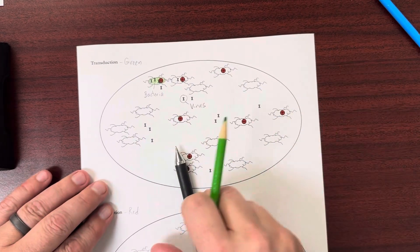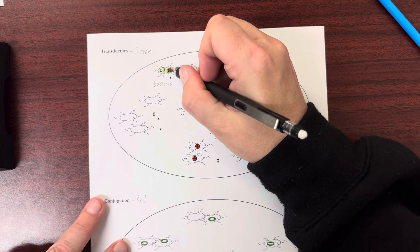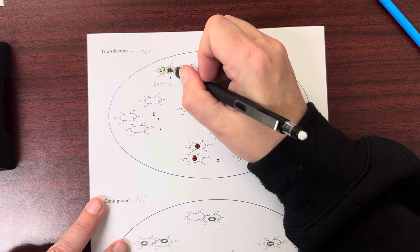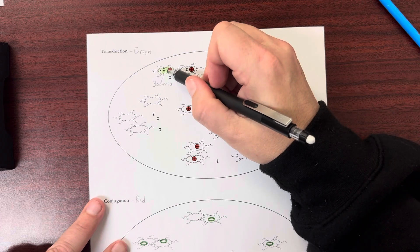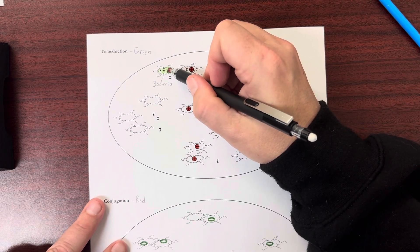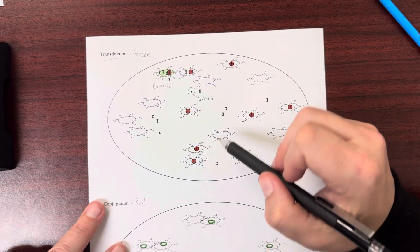And any of these cells that are producing this red, it's some kind of like a protein, this red protein, any of them that are producing that have gone through transduction. And we want to shade them in green.